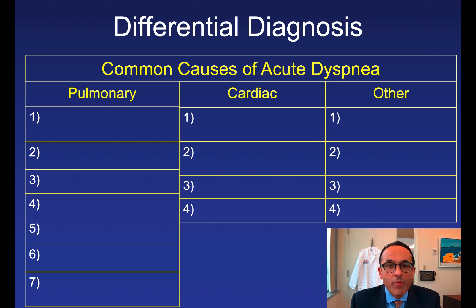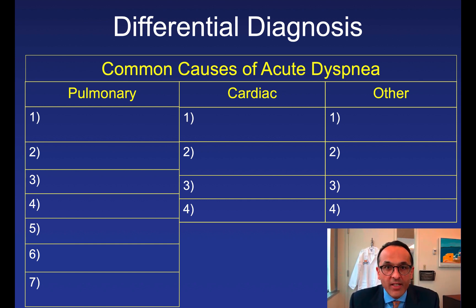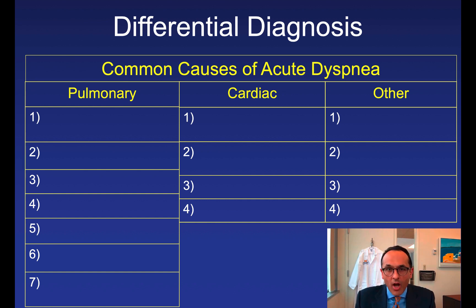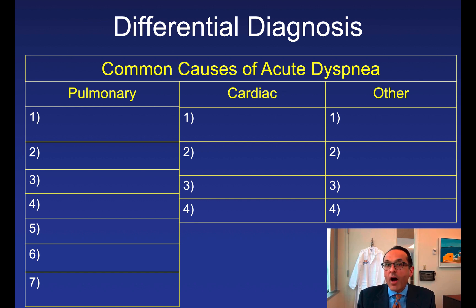These are the 15 most common causes of acute dyspnea. By common causes, I mean things I want you to remember. Differentials should cover the most common problems and the most life-threatening ones. There are seven pulmonary or respiratory system causes, four cardiac causes, and four other causes. Maybe you want to pause the video right now and try to fill them out yourself, then compare with what I'm going to provide.